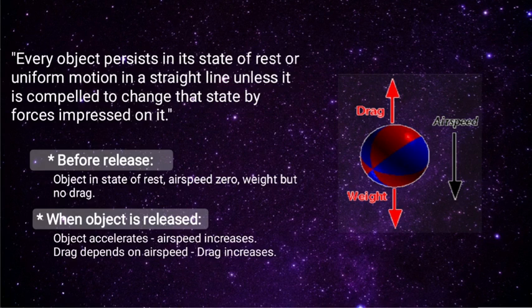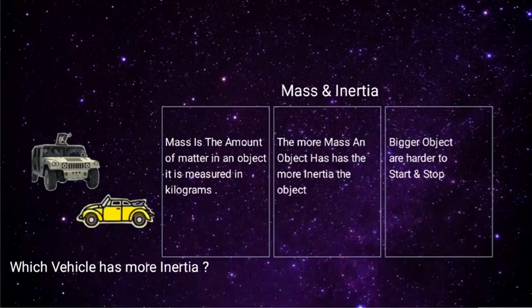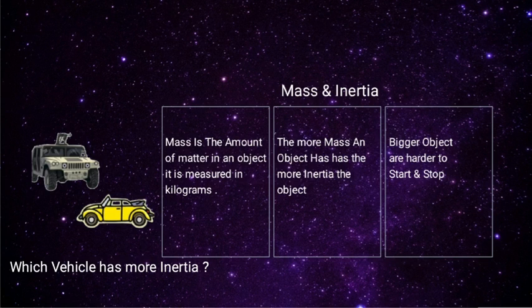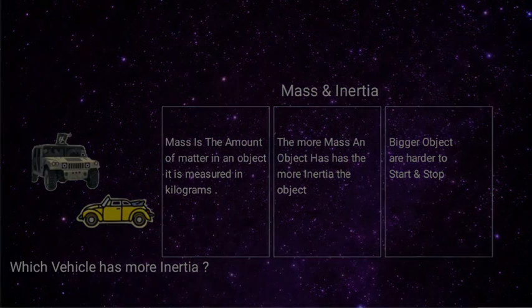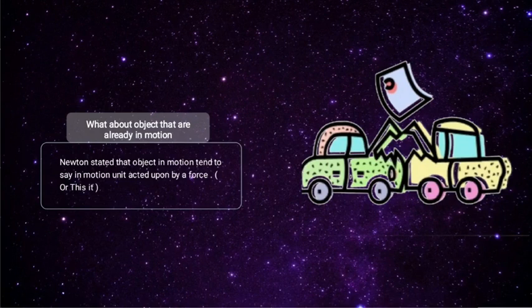Before release, an object in state of rest has airspeed zero, weight but no drag. When the object is released, it accelerates, airspeed increases, and drag depends on airspeed - so drag increases. Mass and inertia: mass is the amount of matter in an object, measured in kilograms. The more mass an object has, the more inertia it has. Bigger objects are harder to start and stop.